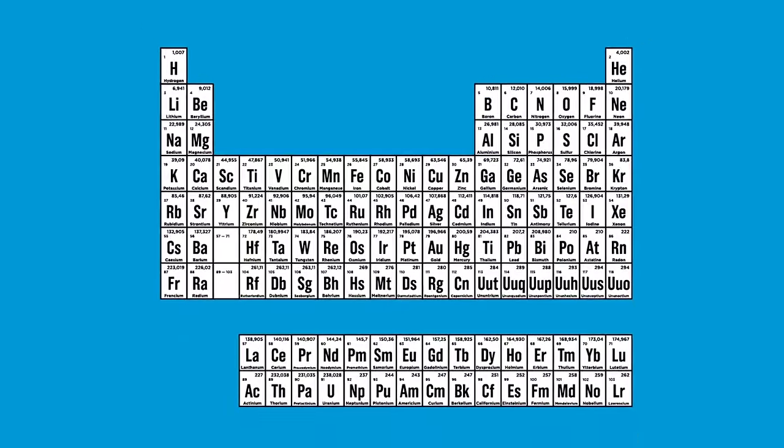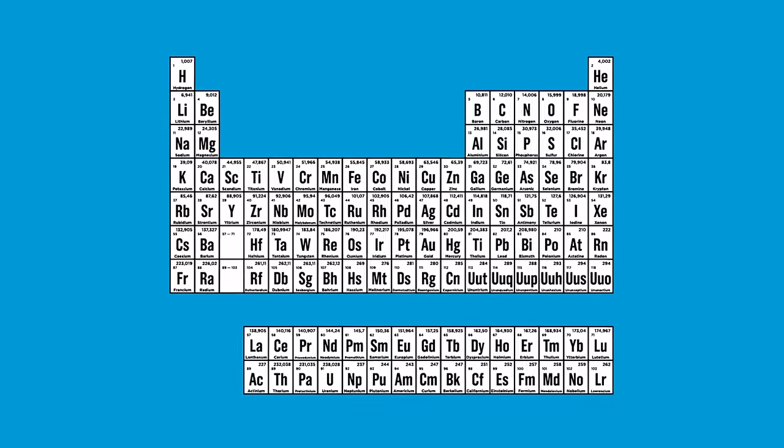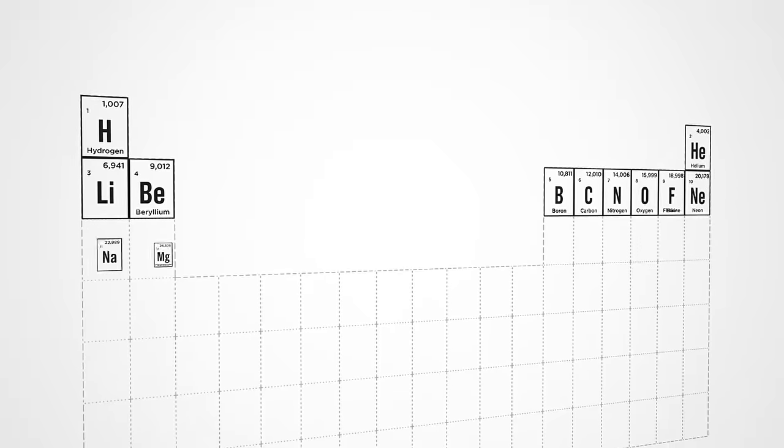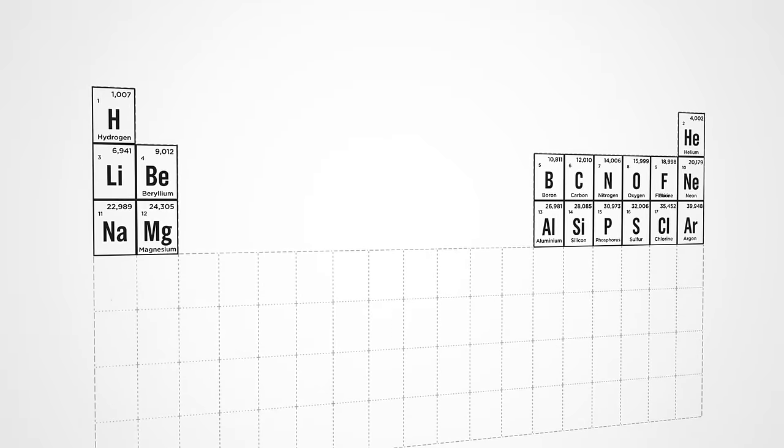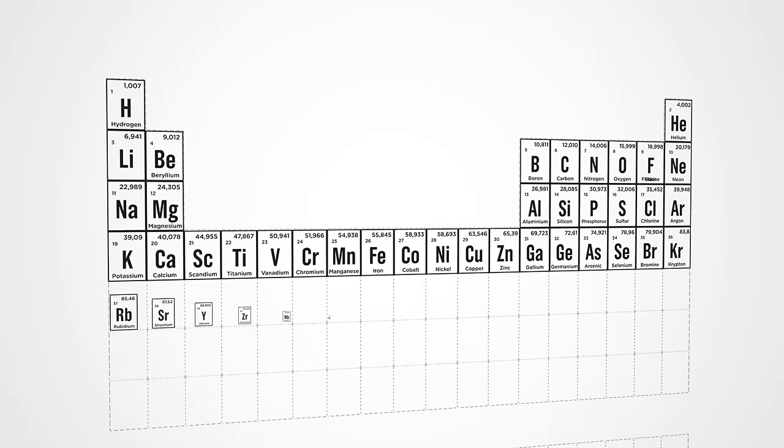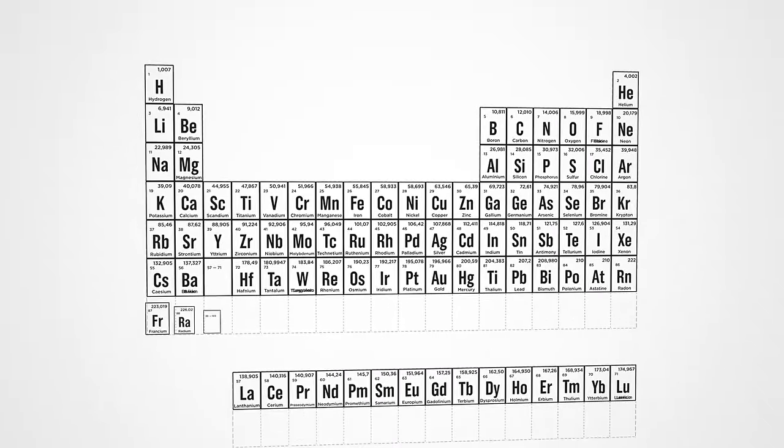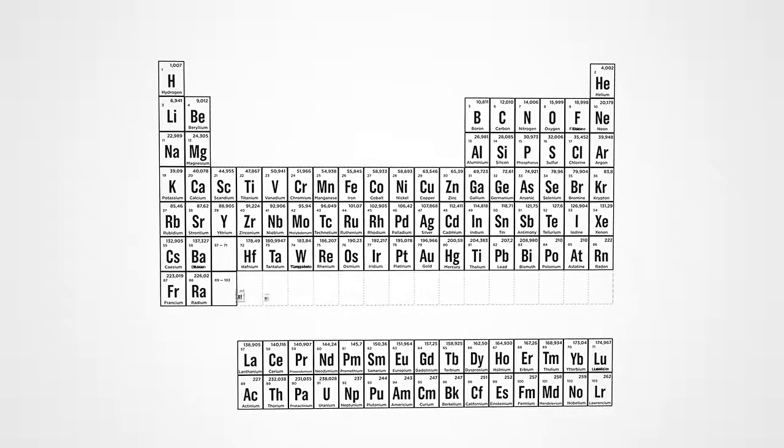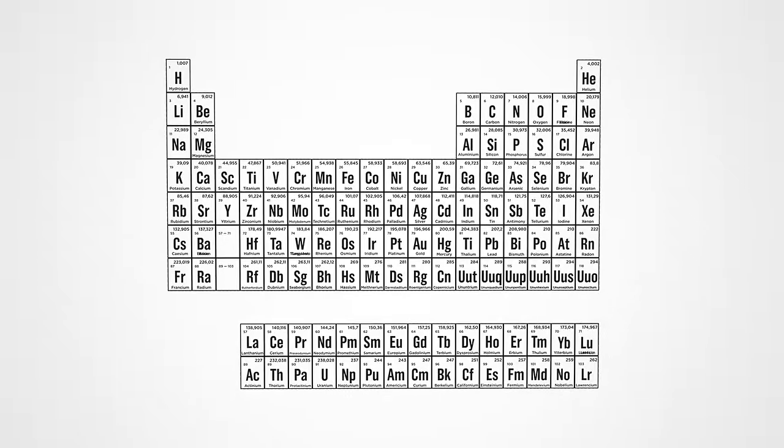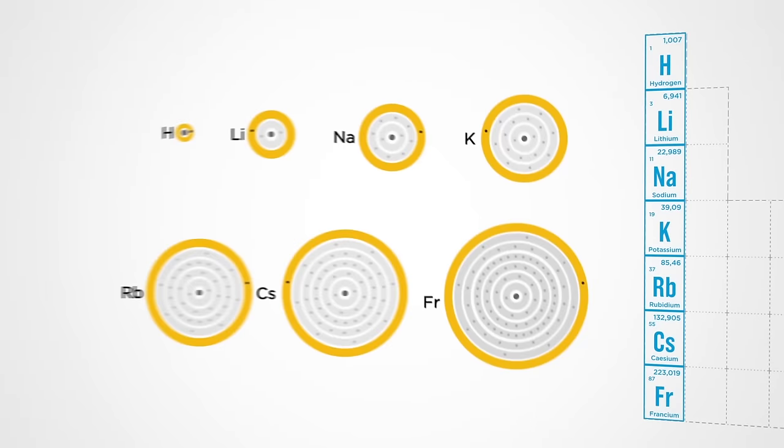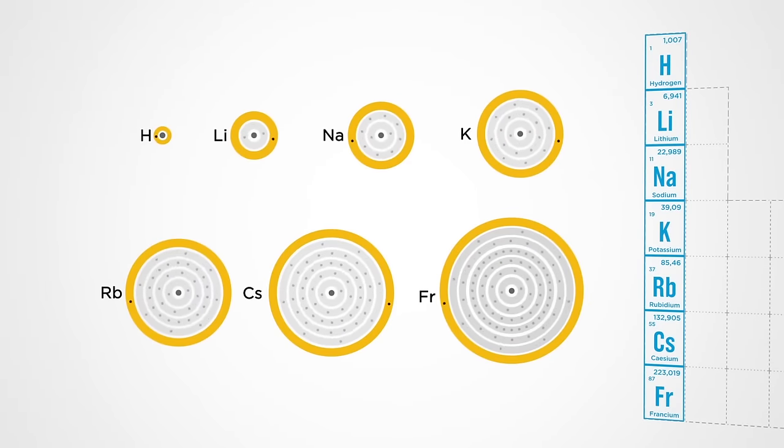The periodic table organizes the elements from smallest to largest according to its core and the distribution of electrons.